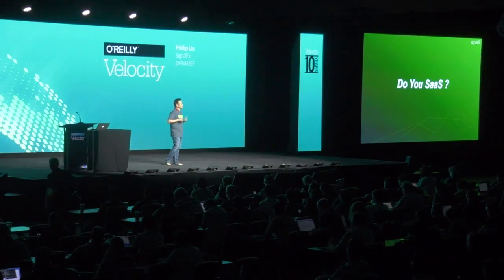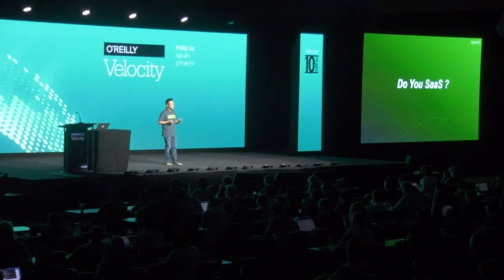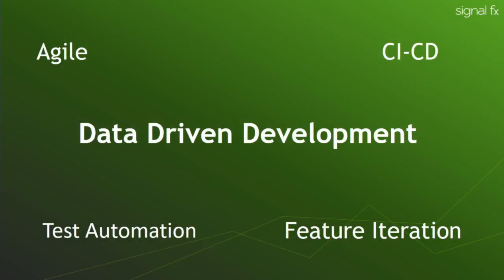We're all sort of living in a state where we have rapid iteration of our software. This rapid iteration has basically changed the way we think about software development. We talk a lot more about Agile these days — sprint planning, releases happening in days and weeks, not months or years.